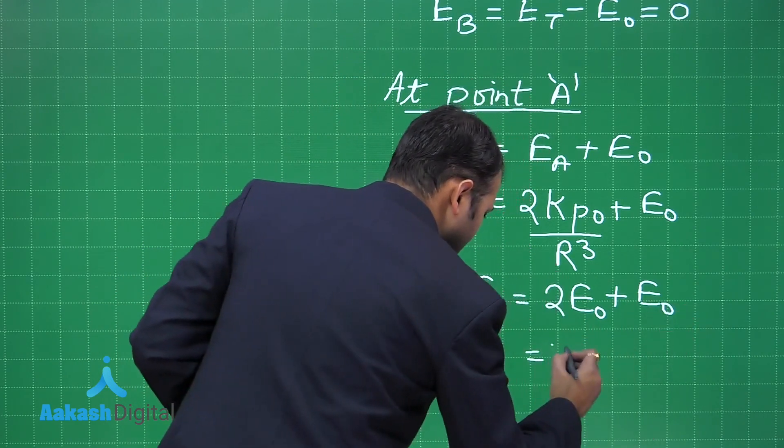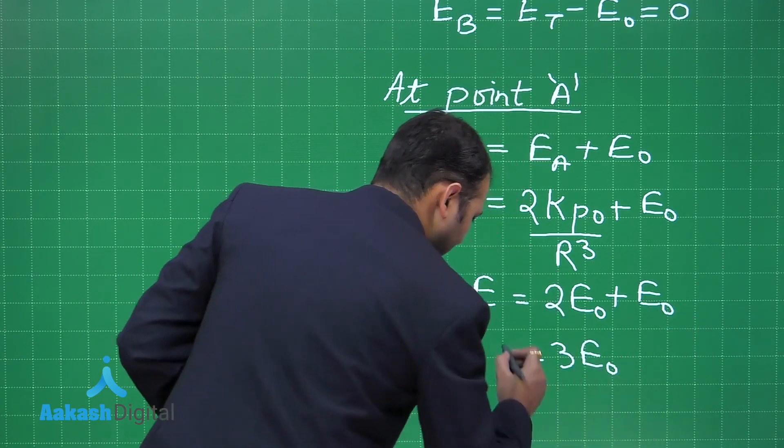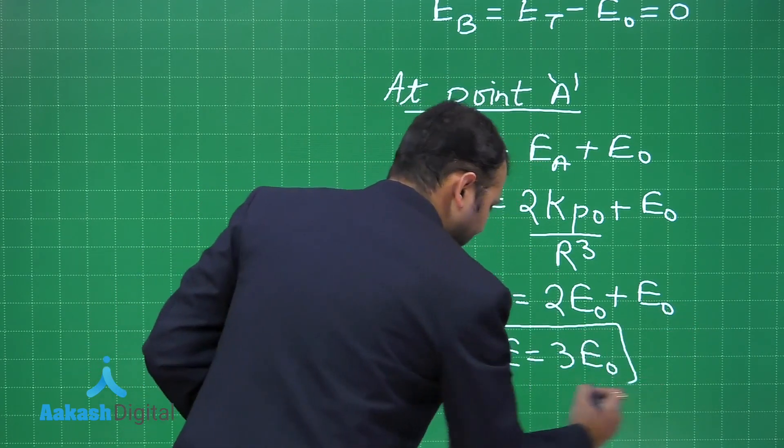So E at A will be equal to 2E₀ + E₀. That would be equals to 3E₀. So now you have the electric field at A point as 3E₀.